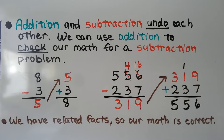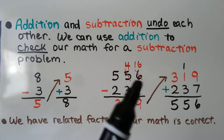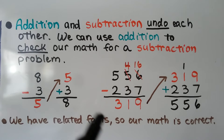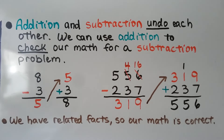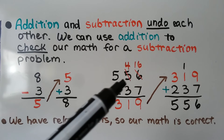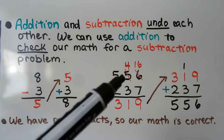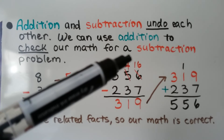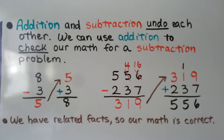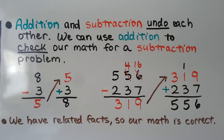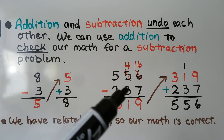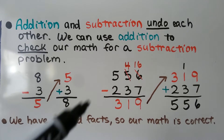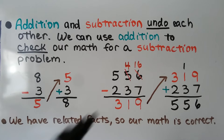Same thing with 3-digit numbers. We have 556 minus 237. This 6 in the ones place is less than the 7, so we need to regroup. We take a 10 from the tens place — from this 5, it becomes a 4 — and we give the 10 to the 6 ones, and we now have 16 ones. 16 ones take away 7 ones is 9. Now we do the tens place: 4 tens minus 3 tens is 10. 5 hundreds minus 200 is 300.